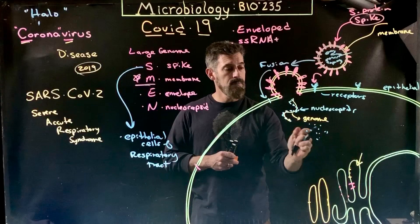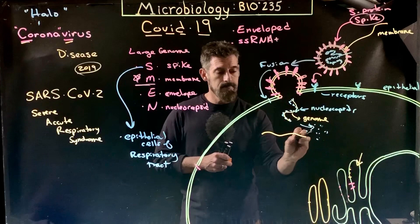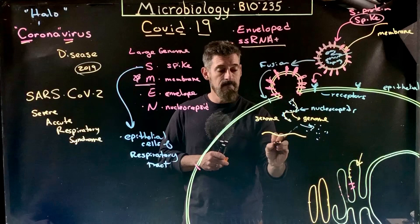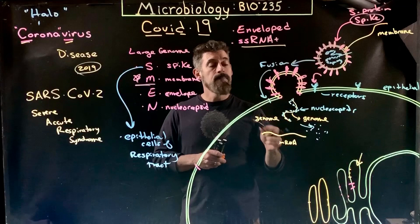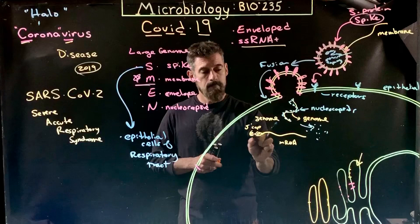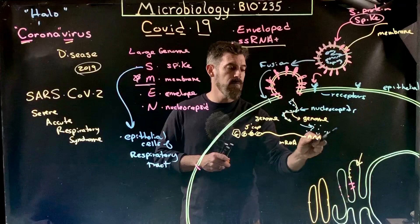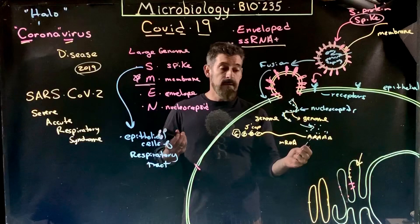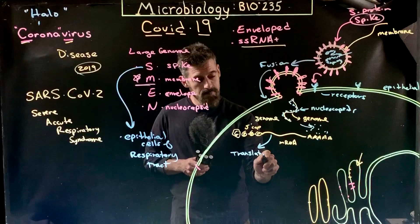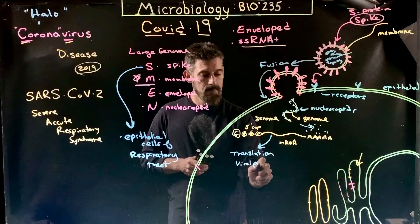Once they enter into the cytoplasm of the cell, the nucleocapsid proteins will be pulled off and then the genome gets exposed. The genome is an RNA. As a single-stranded plus RNA, it essentially is messenger RNA. A characteristic of the coronavirus genome is that it actually has a five-prime cap — it took a backward GTP — and it has a poly-A tail already. So it's ready to go and we can immediately get translation right there of viral proteins.